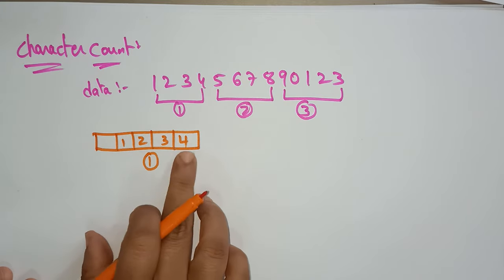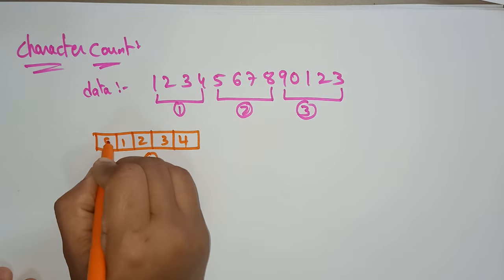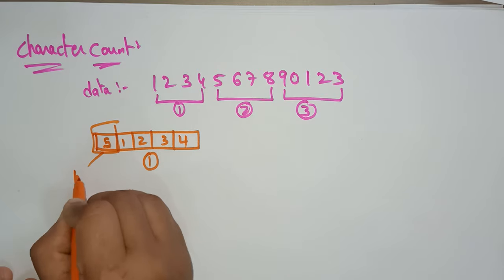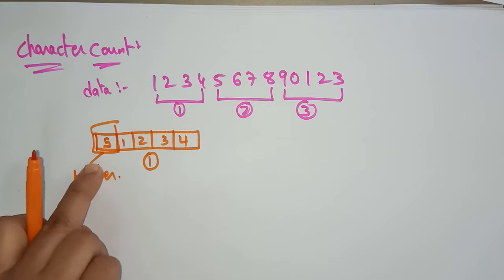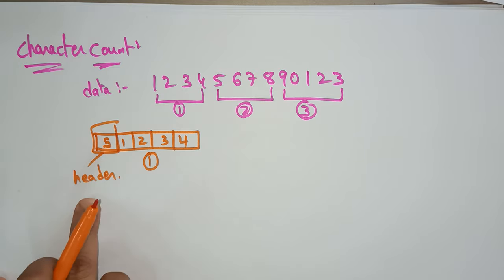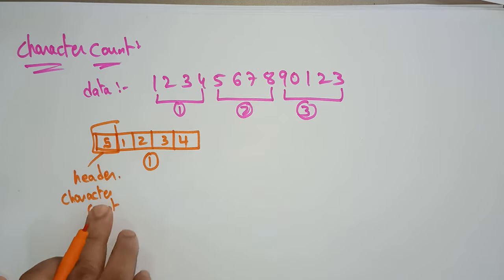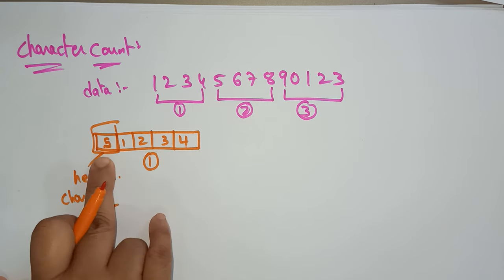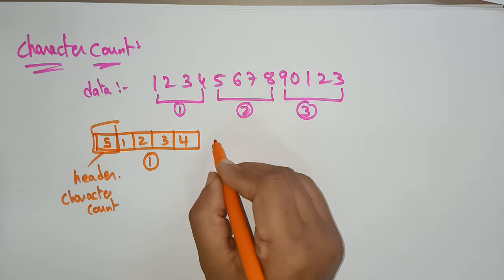Frame one contains characters 1, 2, 3, 4 — total 4 bits of data. So including the header itself, you write 5 in the header. The starting number indicates the header, and this is the character count. Including that number, 1, 2, 3, 4 bits are there, so you write 5. The next frame consists of characters 5, 6, 7, 8.